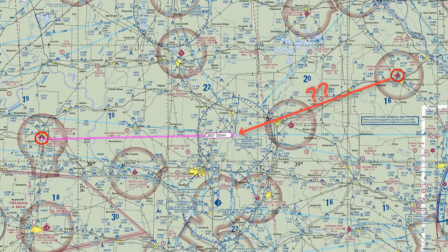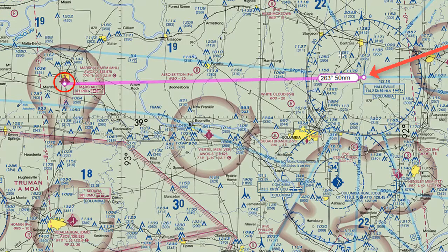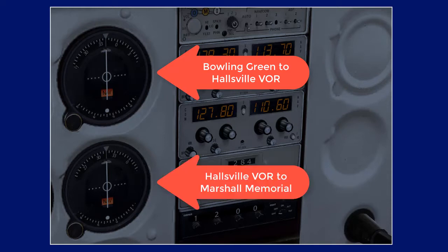I'm purposely just going to take off from Bowling Green and not even worry about the course I need to be on, as I'll show you a trick you can use to go to a VOR directly once you're in the air. Then once I arrive at the VOR indicator, I can see on skyvector.com that I will need to fly on the 263-degree radial from the VOR station over to Marshall Memorial Airport. So I'm going to use the first VOR indicator to handle Bowling Green to the Hallsville VOR station, and the second VOR indicator to handle flying from the Hallsville VOR to Marshall Memorial.